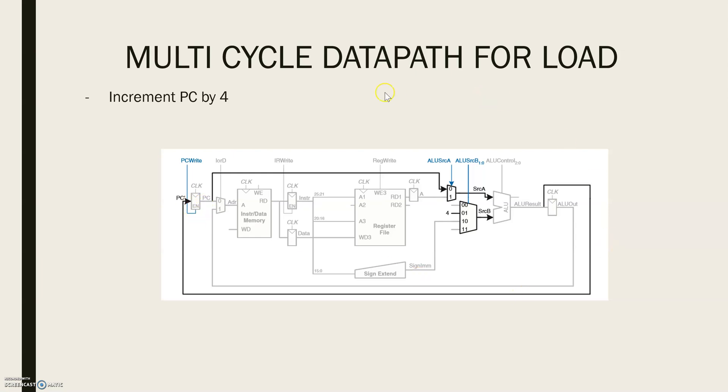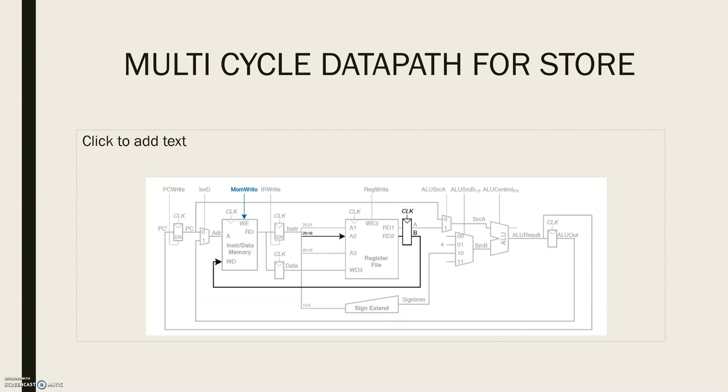This will complete the datapath for a load instruction. Now let us extend this to handle store instruction. Like load instruction, store instruction reads a base address from port 1 of the register file and sign-extends the immediate value. The ALU then adds this base address and the immediate to find the memory address. All of these functions are already supported by the existing hardware in the datapath.